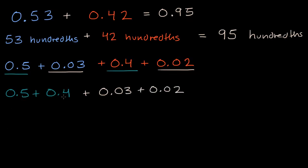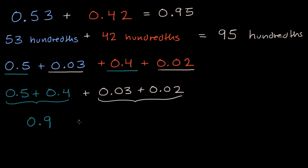So five-tenths plus four-tenths — we've done this in previous videos — if I have five of something and I have four of it, that's going to be nine-tenths. And then three-hundredths plus two-hundredths, that's going to be five-hundredths, so plus 0.05. And nine-tenths plus five-hundredths is nine-tenths and five-hundredths, which you could also say as 95 hundredths.